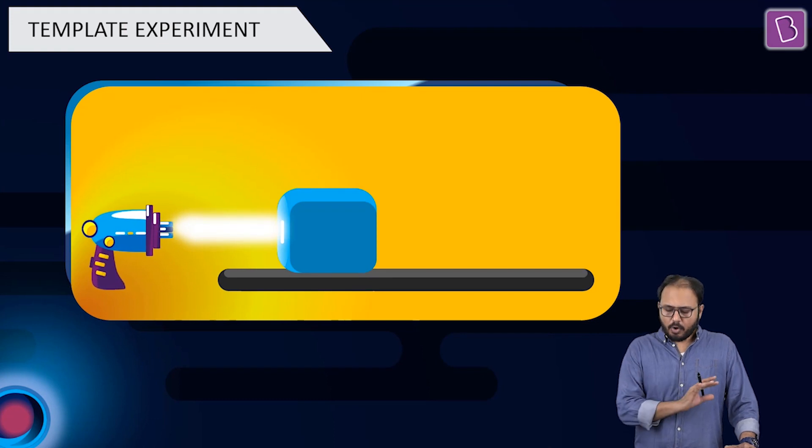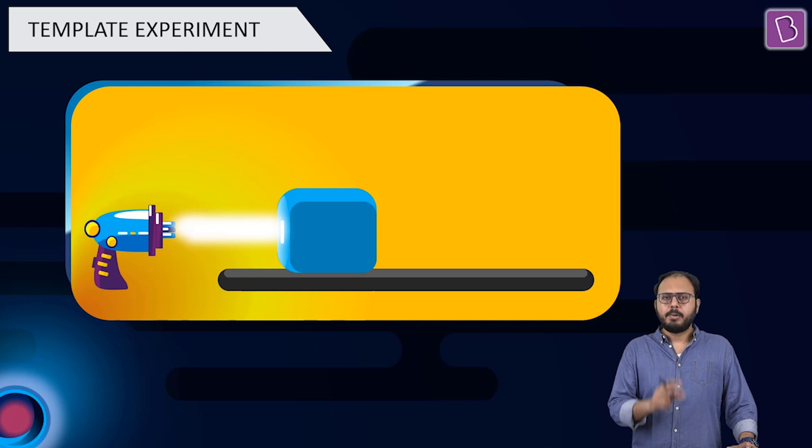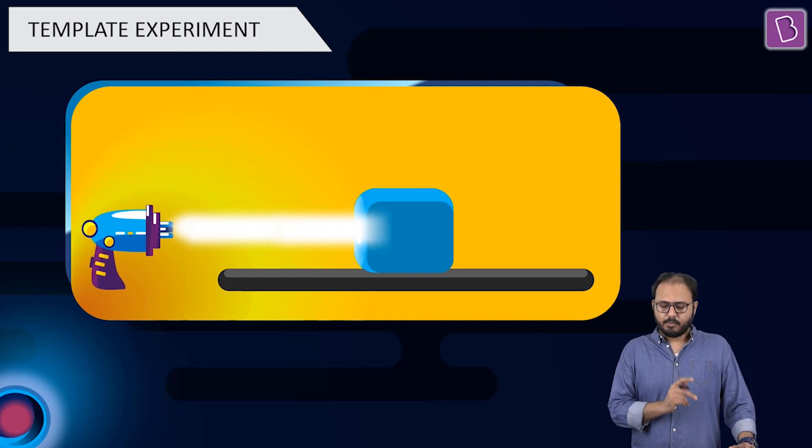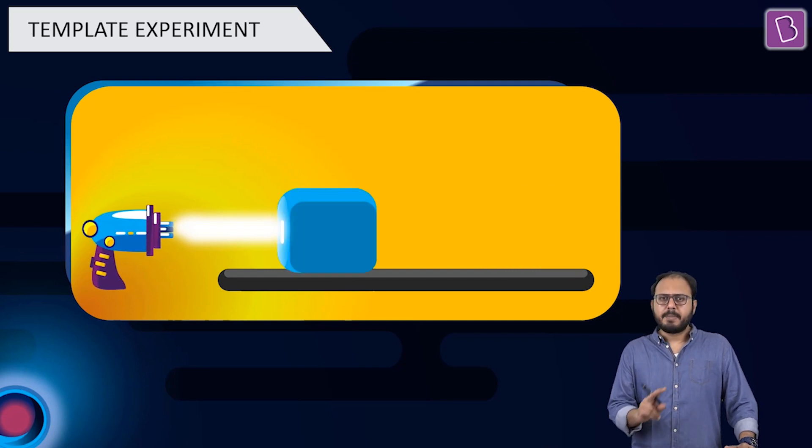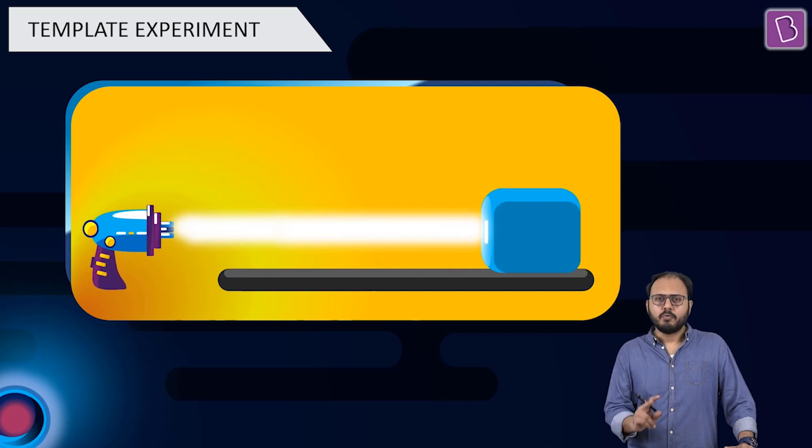Template of the experiment is very simple. On a horizontal table, you have that block. Look at the force gun blowing a beam on the block. And what happens? The block moves. Is the template understood? Watch it again. The force gun throws a beam on the block. The block moves.